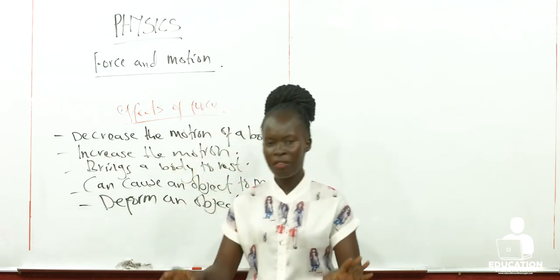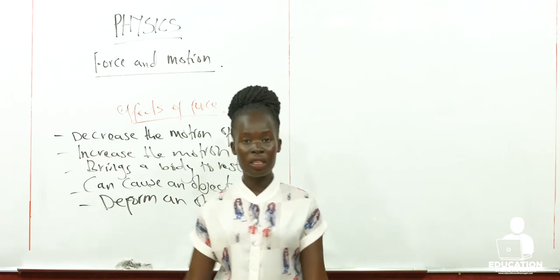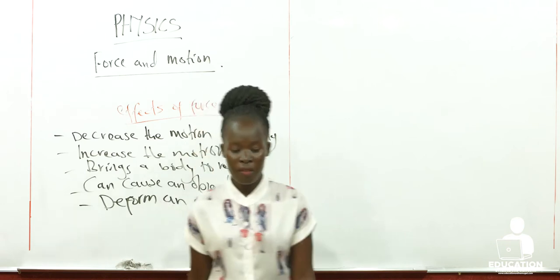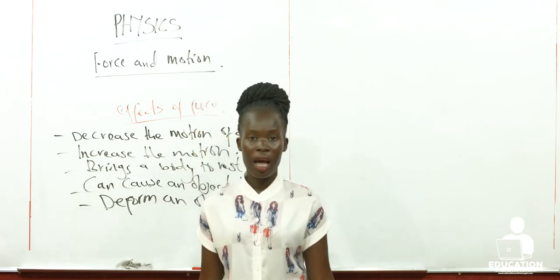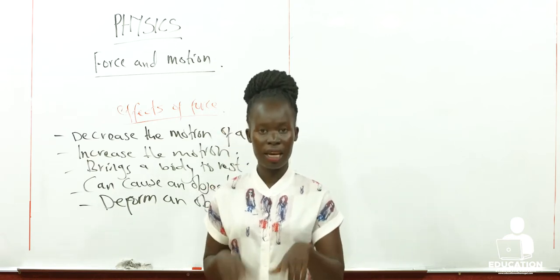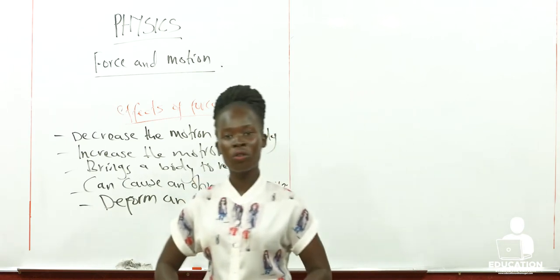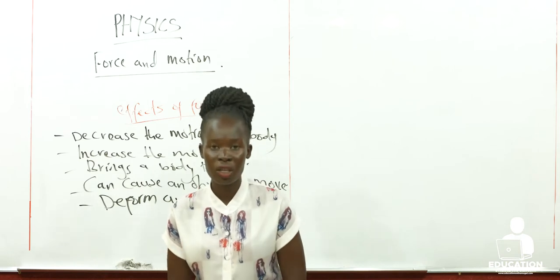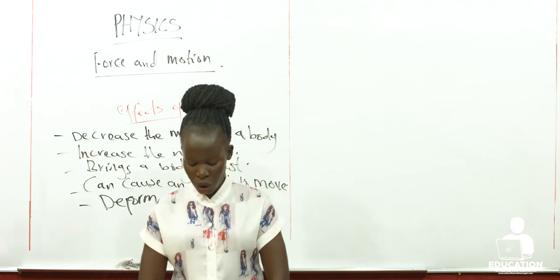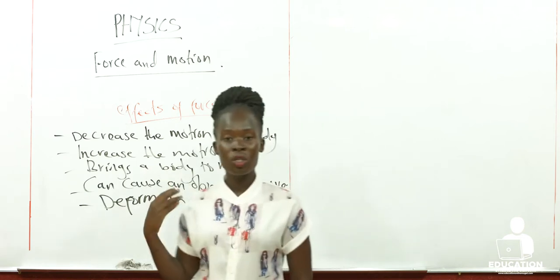A force has so many effects on an object. Even when the object is in motion, it can change the direction of the body. For example, if I'm running and you give me a little push, instead of me continuing in the straight line I was taking, I divert. That means the force has caused me to change the direction I was initially taking.